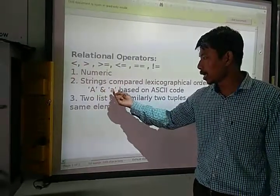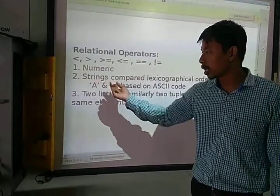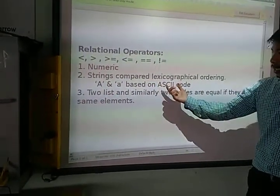Suppose here A and A. But here A and A. Both are A. But how you will compare this? It will be compared based on this ASCII code.